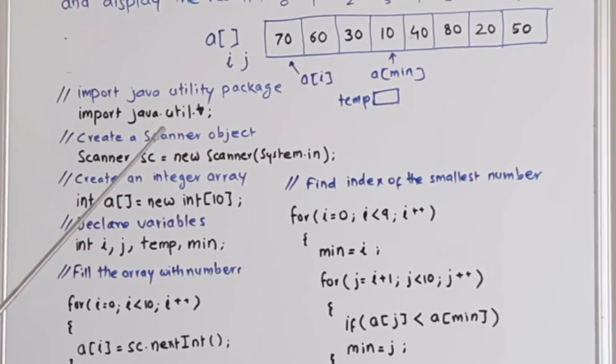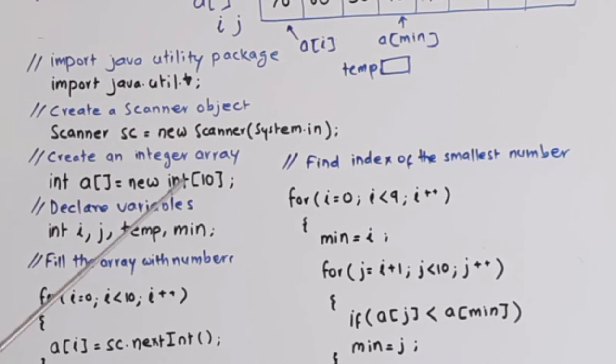We will import the utility package. Import java.util.star then create a scanner object. Scanner sc is equal to new scanner system dot in. Then create an integer array int a equals to new int 10. So we have named our array a with a capacity of storing 10 integer values. Then we will declare variables int i j temp and min.